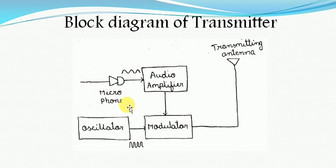In this example, we have considered the microphone as the transducer. Next, the audio amplifier simply boosts up or strengthens the incoming weak signal. The oscillator is used to generate a high frequency signal, which is used in order to perform the modulation.